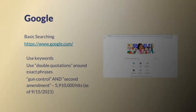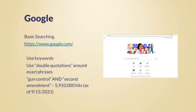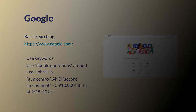Google is great when you just need to do basic searching. You can enter keywords and use double quotations around exact phrases when you want to make sure those appear in your results. Our example search — gun control and second amendment — returned 5,910,000 hits on September 15, 2021.